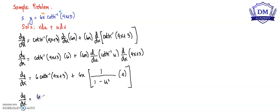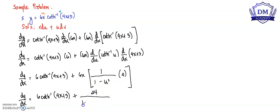So we have inverse hyperbolic tangent of 4x plus 3 plus — let's multiply this — we have 24 all over 1 minus u squared, where u is 4x plus 3, quantity squared.